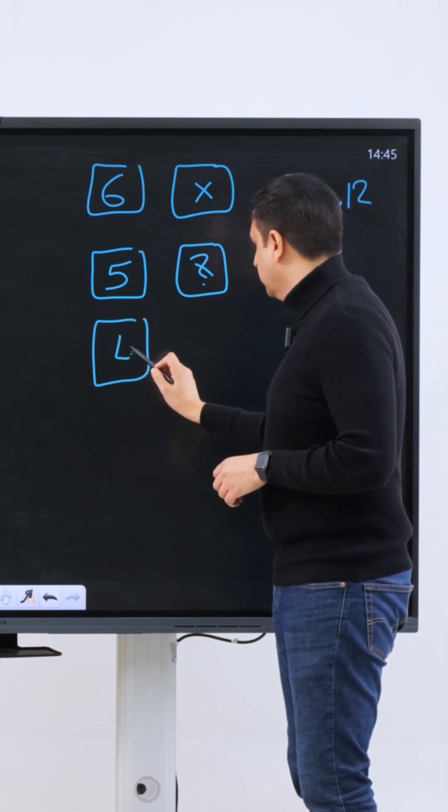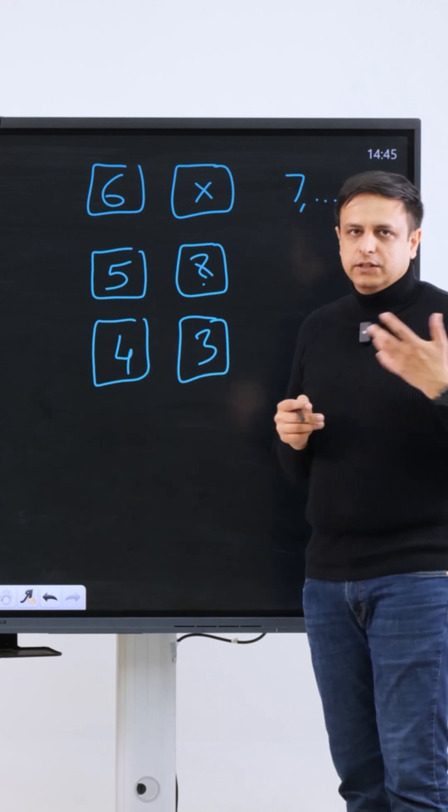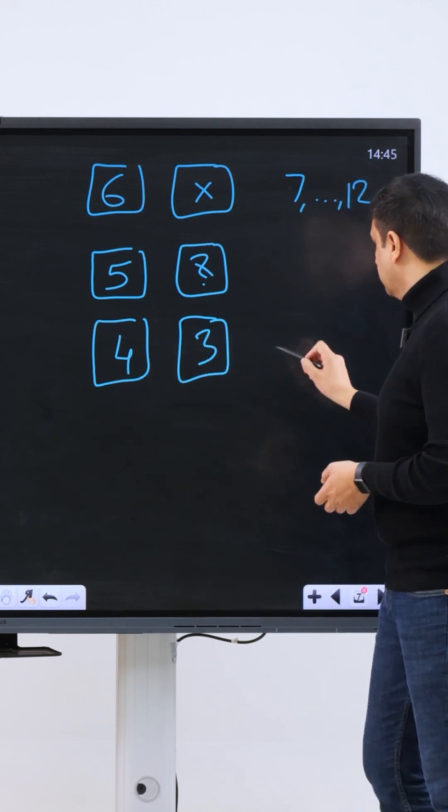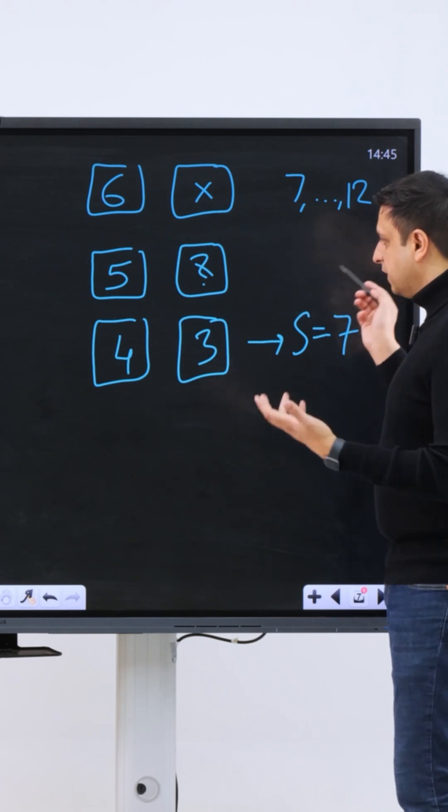But if you have four on the first die, then three on the second die works because four into three is twelve, which is a multiple of six. So in this case also we get a sum of seven. So seven is a possible sum.